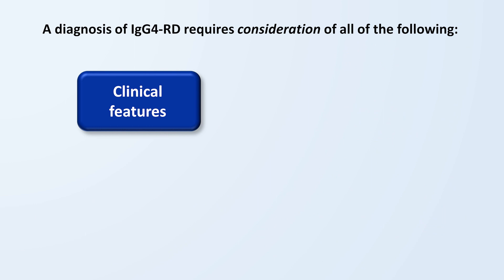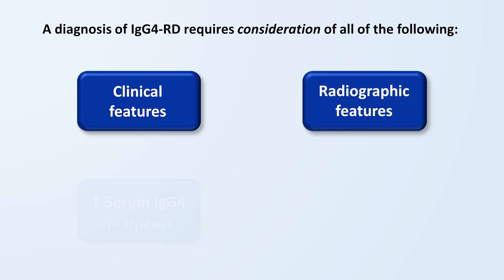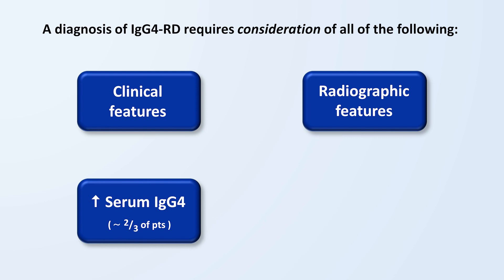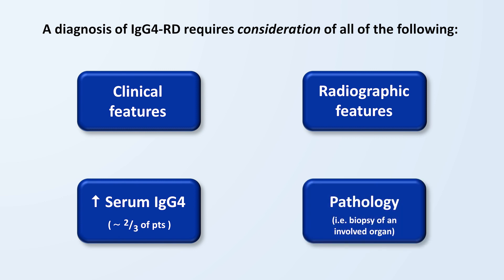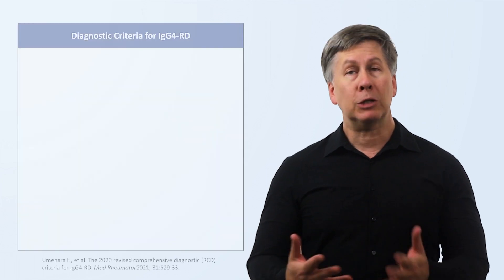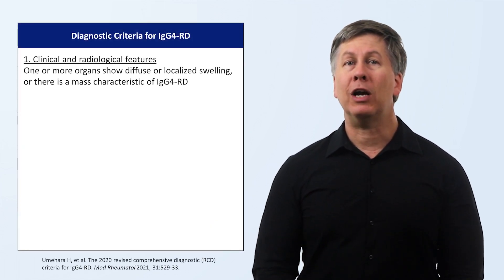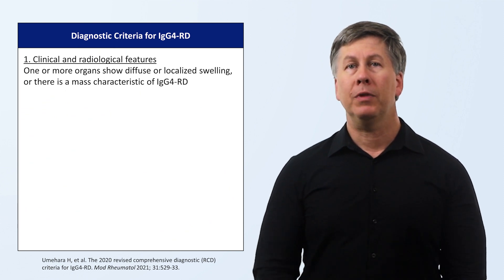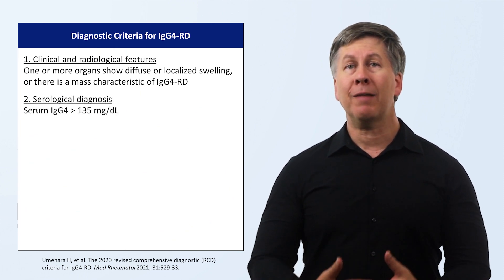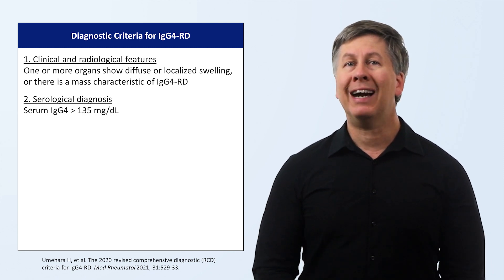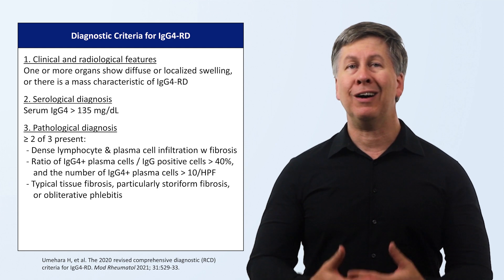Moving to diagnosis, a diagnosis requires consideration of all of the following: consistent clinical features, consistent radiographic features, elevated serum IgG4 levels (which are only seen in about two-thirds of patients), and most critically, consistent pathology following biopsy. Diagnostic criteria has been proposed, consisting of clinical and radiographic features as one unified category, a serum IgG4 level above 135 mg per deciliter, and two of three characteristic pathologic features seen on a biopsy of an affected organ.